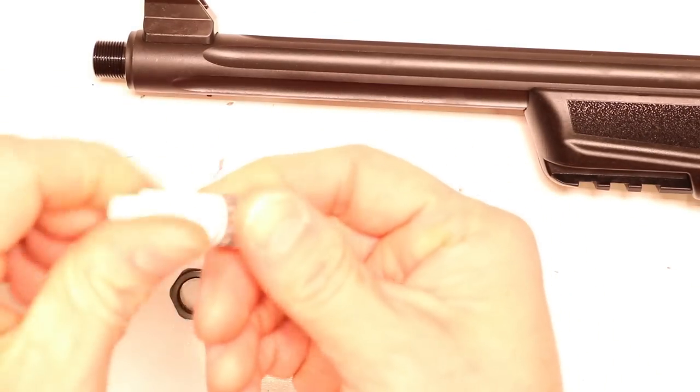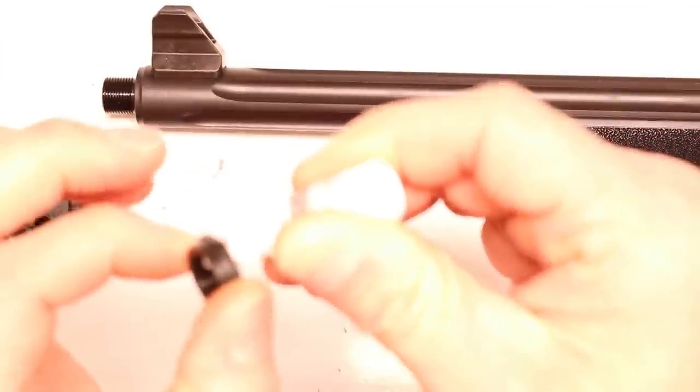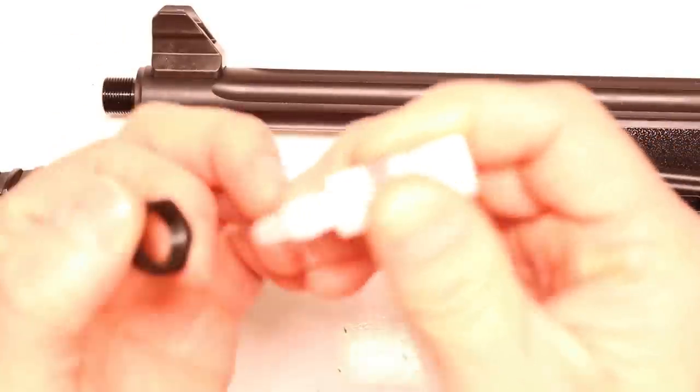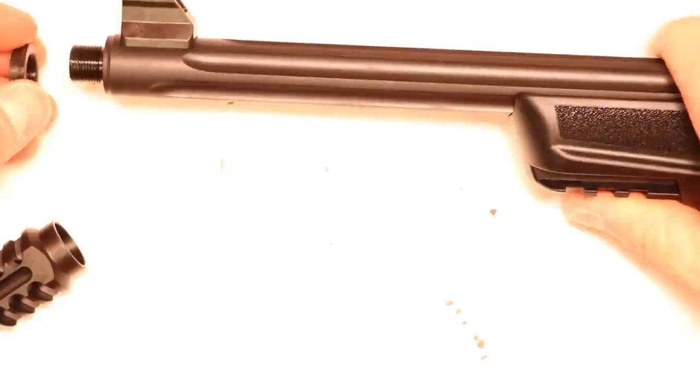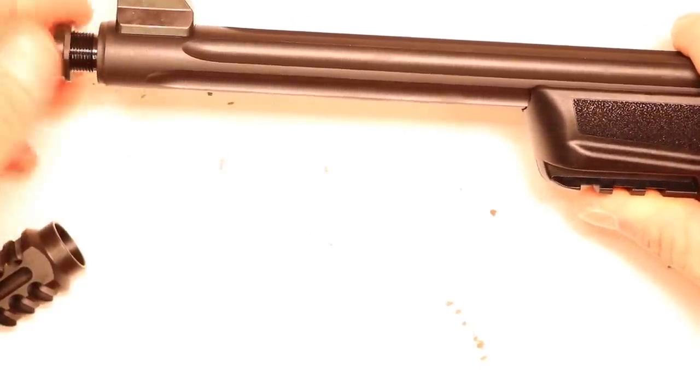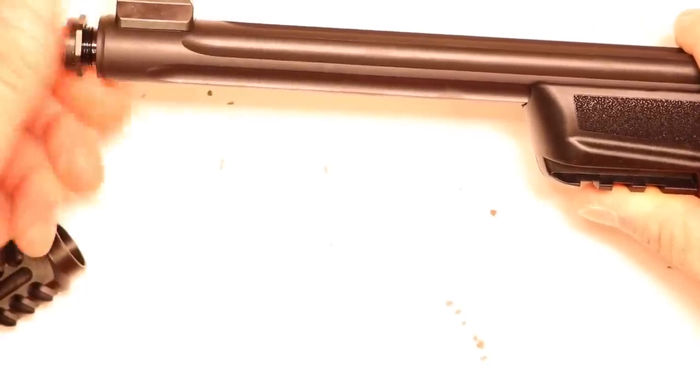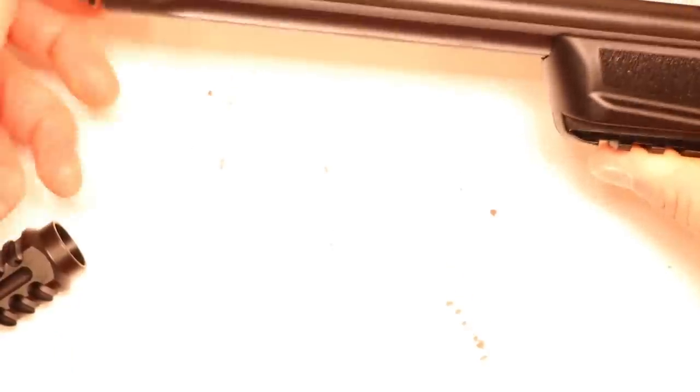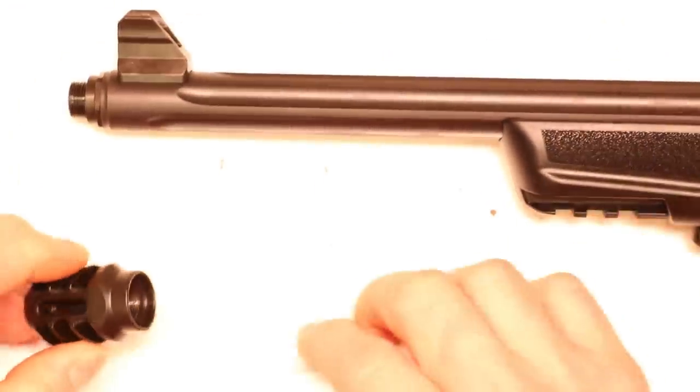So then grab your Rocksett, put a little bit on the threads of that jam nut. You know, just do like three drops all the way around. That'll be plenty. I'm going to Rocksett on there, so now we just simply thread on the jam nut first. You can see that smooth little collar portion is facing the end of the barrel. You want to get it all the way hand tight there.